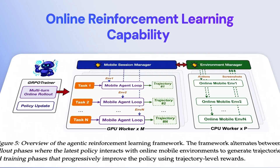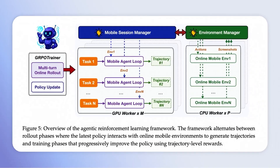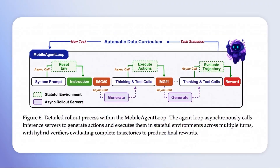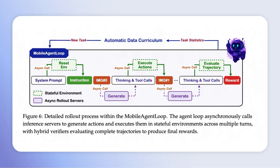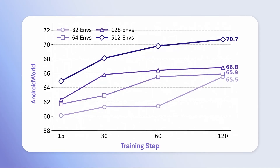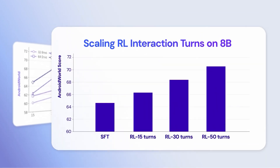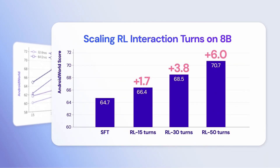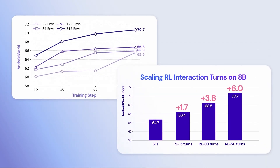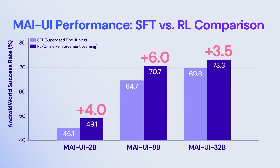Furthermore, MyUI builds massive parallel environments and scales the environment interaction steps for online reinforcement learning. Through iterative rollout and RL training in dynamic environments, MyUI continuously evolves like a human in real-world scenarios. The framework supports online RL training across 512 parallel environments and extends the maximum trajectory horizon to 50 steps, enabling consistent improvement on long-horizon tasks under the Android World Benchmark.